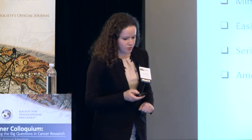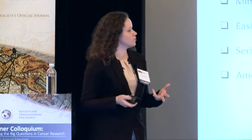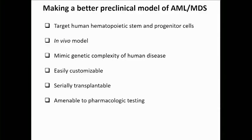We set out to develop models that would be more faithful to both normal hematopoiesis and leukemia development. Since we know the target cell of transformation in most myeloid malignancies, we wanted to target human hematopoietic stem and progenitor cells, develop a model that would allow us to monitor disease progression in vivo, mimic the genetic complexity seen in human patients, be easily customizable — allowing us to dial in or dial out particular combinations of mutations — be serially transplantable, and be amenable to pharmacologic testing.